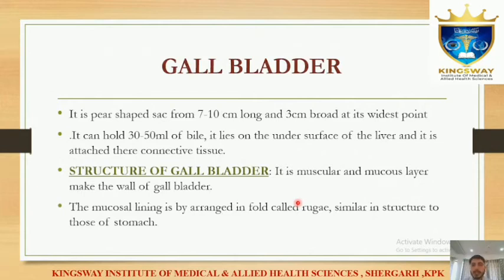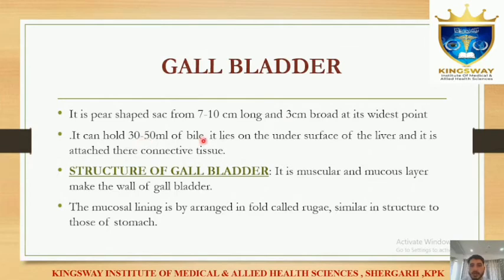As mentioned earlier, juices excreted by the liver are stored in the gall bladder. The gall bladder stores bile. It is 7–10 cm long and 3 cm broad, and stores 30–50 ml of bile. The gall bladder is located on the undersurface of the liver and is attached to it by connective tissue.